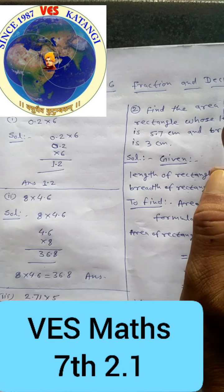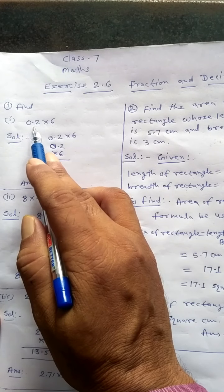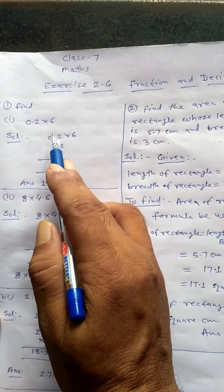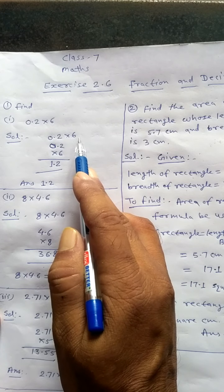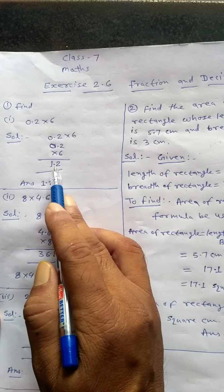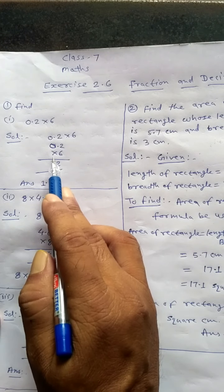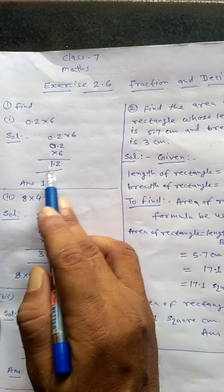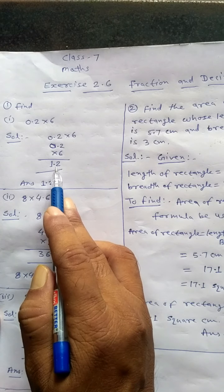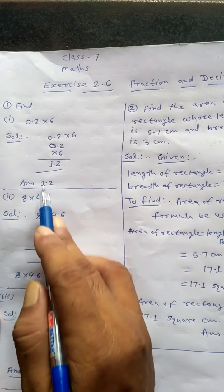Decimals. Question number one: Find 0.2 into 6. Solution: 0.2 into 6. 6 twos are 12. Therefore 1.2, because the point is placed one digit from the left side. So the answer is 1.2.